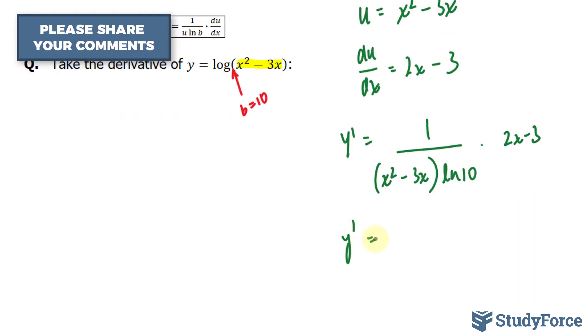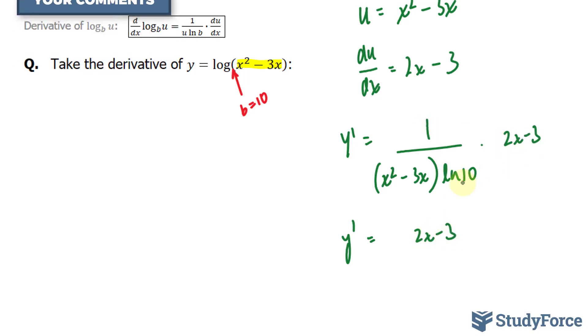Cleaning this up, y prime equals 2x minus 3. So I multiplied 1 and 2x minus 3, which gives us the following: over x squared minus 3x ln 10.